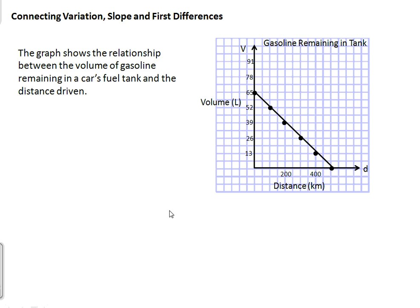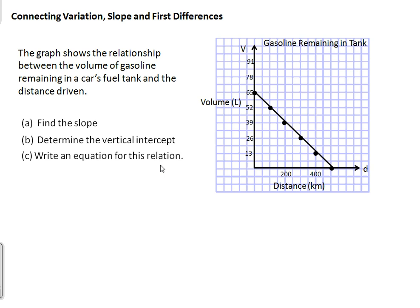Let's look at an example. The graph shows the relationship between the volume of gasoline remaining in a car's fuel tank and the distance driven. As you can see, we have a line with a negative slope since it's falling downwards — as distance increases, our volume is decreasing, which makes sense because we're losing gas the more that we drive. Part a: find the slope, determine the vertical intercept, and then write an equation for this relation. The only pieces of information we need to write the equation are the slope and the vertical intercept.